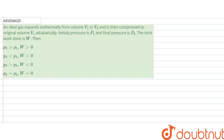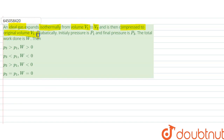The question says: an ideal gas is given which expands isothermally from volume v1 to v2, and is then compressed to original volume v1 adiabatically. The initial pressure is p1 and the final pressure is p3. The total work done is W. Which is the correct statement?